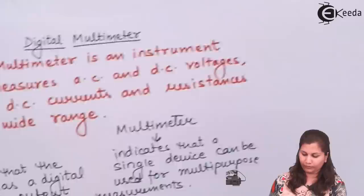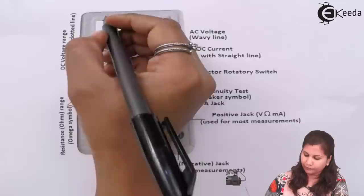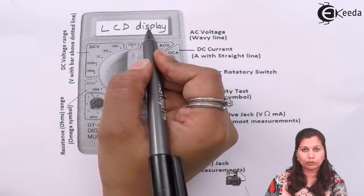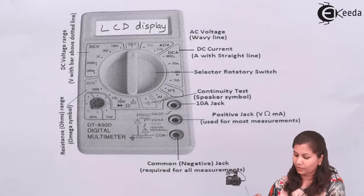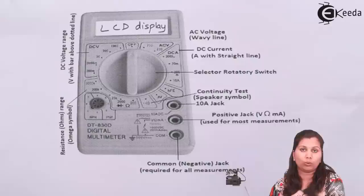Let's see how a digital multimeter looks. This is a digital multimeter in which we have an LCD display — a liquid crystal display — where we get the digital output. On the front panel we have a knob which is the selector rotary switch. This multimeter can be used for the measurement of various parameters like voltage, current, and resistance. It can be used as a voltmeter, an ammeter, and an ohmmeter.